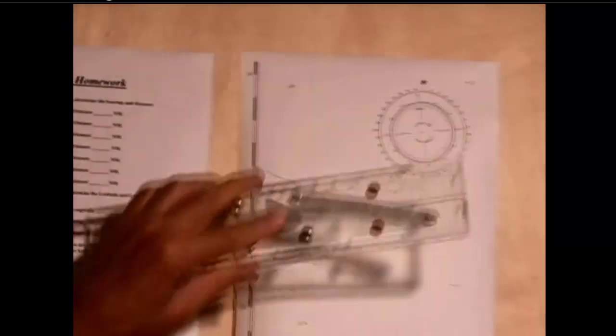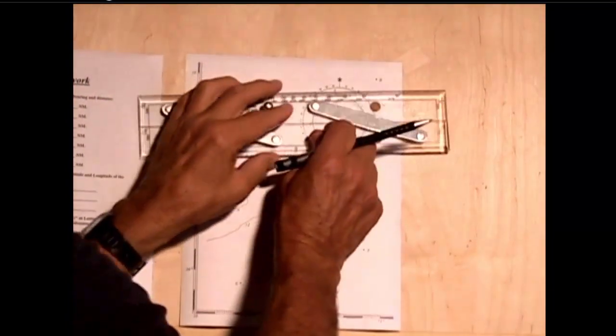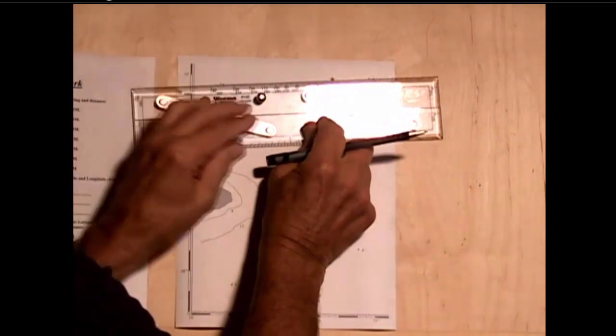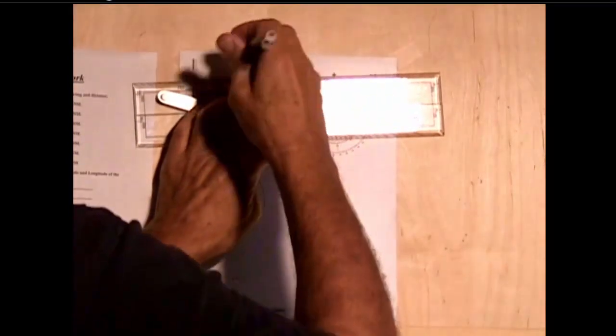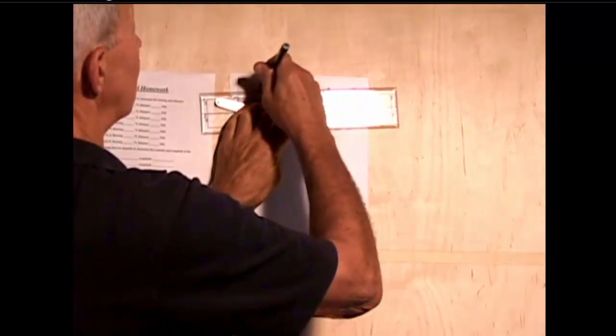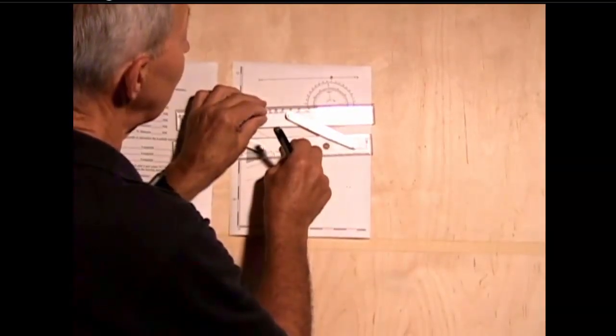So to do that, we're very simply going to take our parallel rules and lay it between points A and B, and draw a line between them, walk it down to the center of the compass rose.